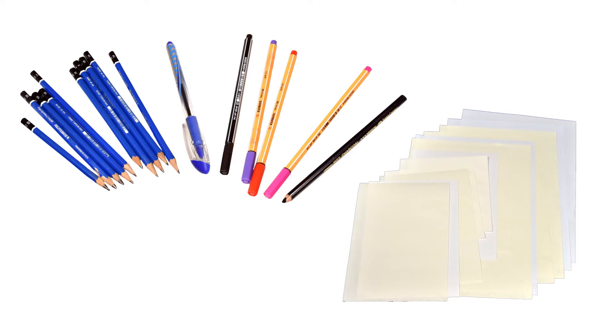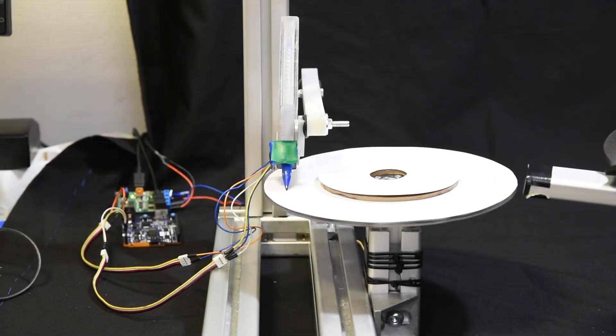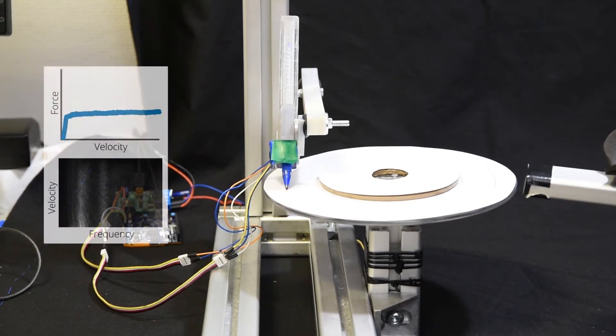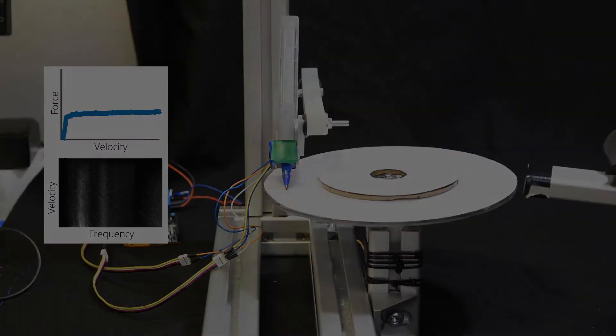We characterize each tool's surface combination on our custom-built measurement table. The table uses a mechanical arm to measure the friction and velocity-dependent vibration spectrogram of a tool riding on a surface.